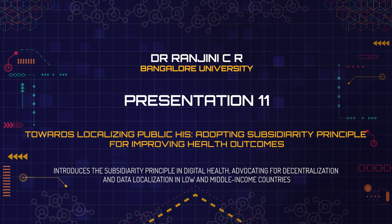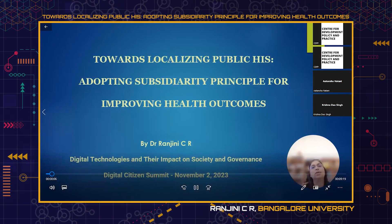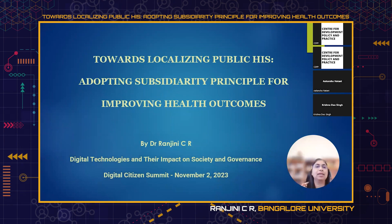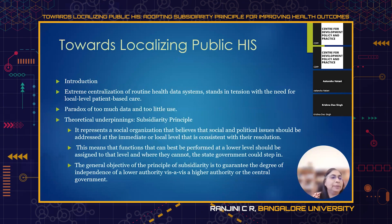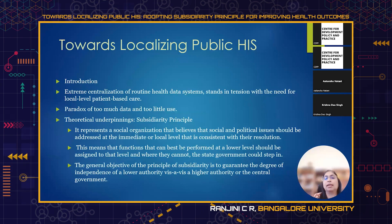I'm Ranjini. The title of my paper is 'Towards Localizing Public Health Information Systems: Adopting Subsidiary Principle for Improving Health Outcomes.' There are different types of patient-centric data being collected — demographic data, data through health surveys, routine data collected at primary health centers, and sub-centers, as well as epidemiological data to assess the disease burden of the population.